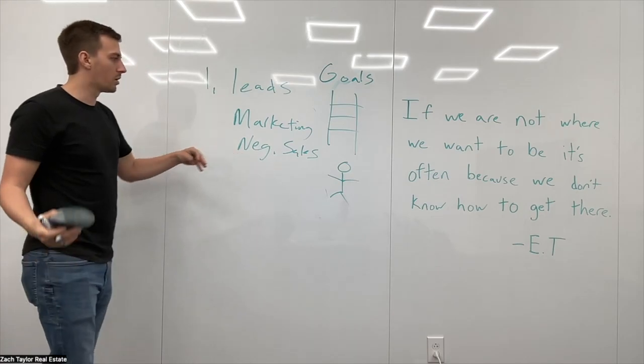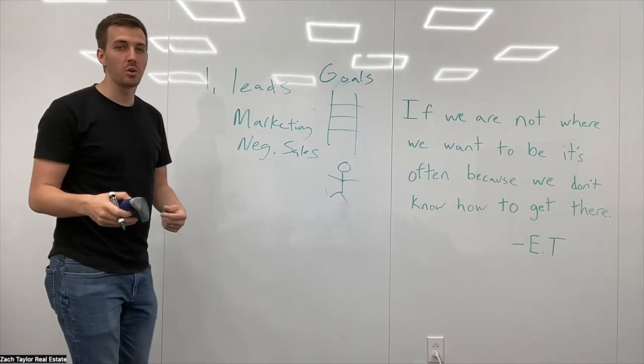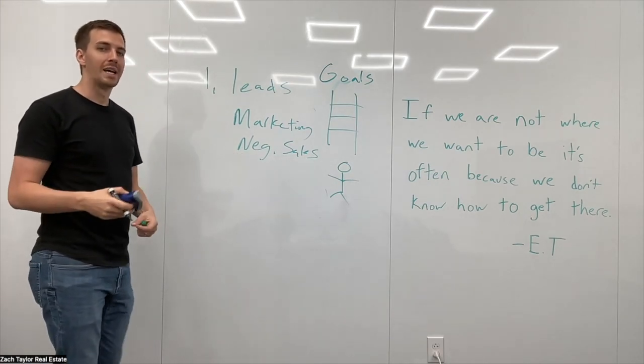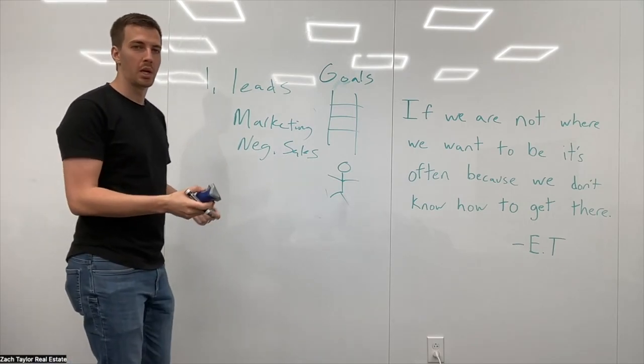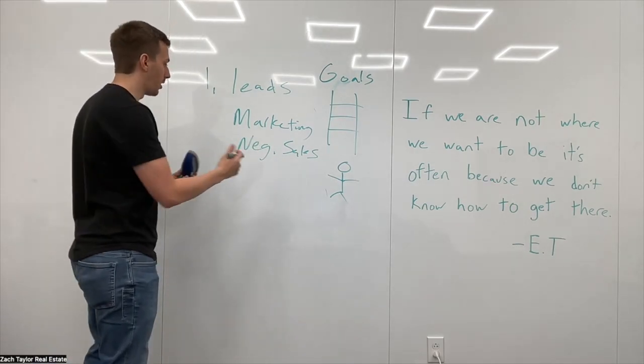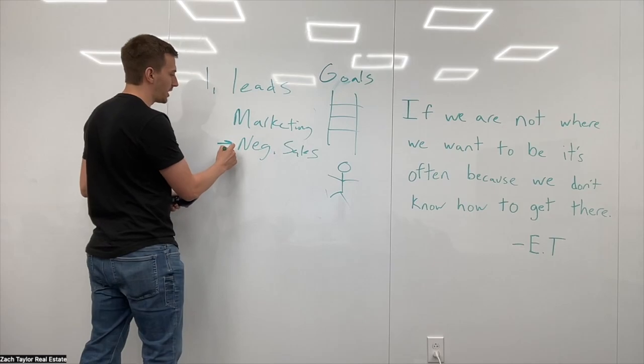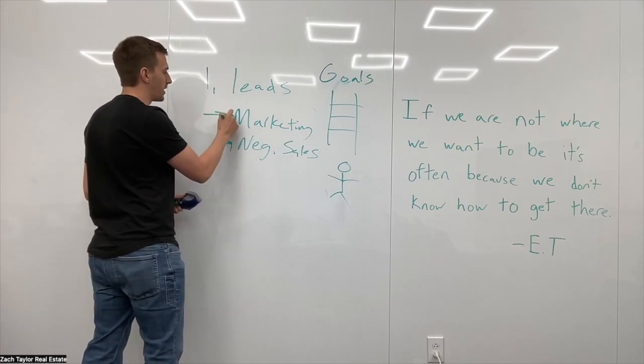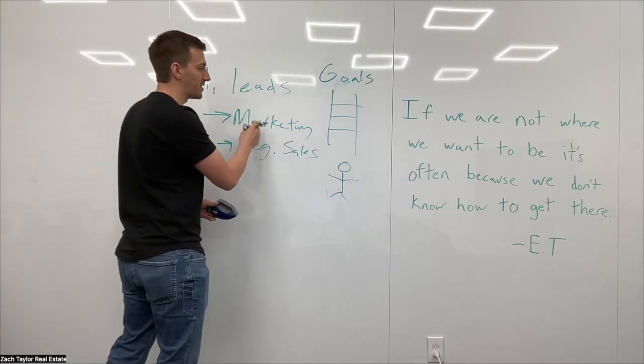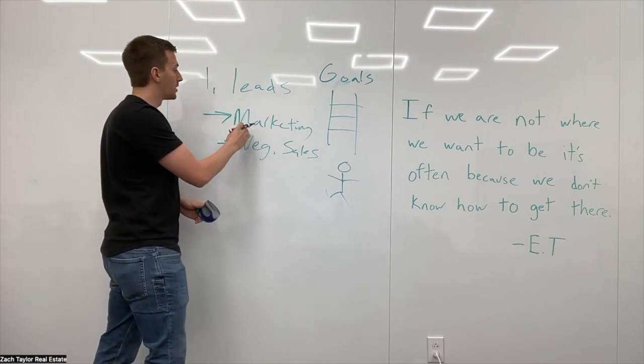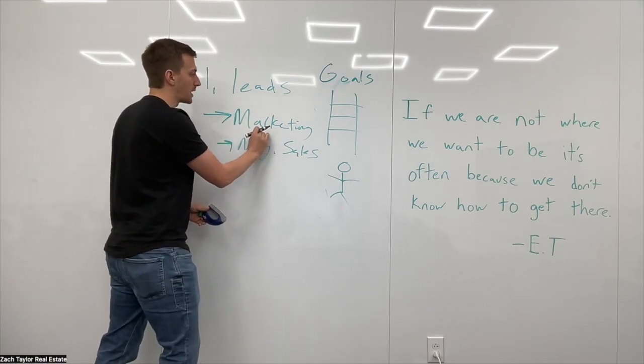So some agents, they say, well, Zach, if I go on an appointment, I close a majority of the appointments I go on. I know how to negotiate. I know how to fill out listing agreements and stuff like that. Okay. So maybe it's not a negotiating problem. Maybe it's a lack of understanding of proper marketing. We need more leads in the door. We need to meet more people. So where can we find different tactics to start marketing?